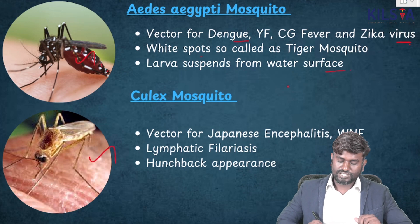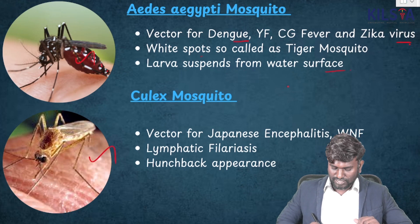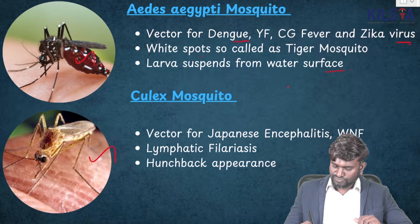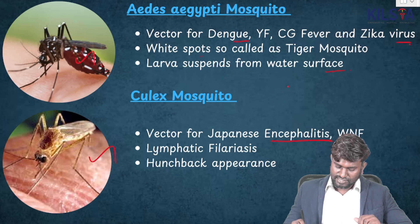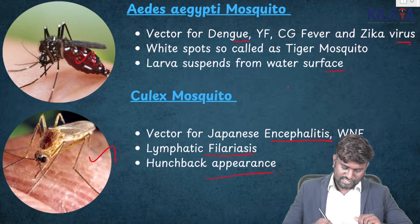This image is going to be Culex — the vector for Japanese Encephalitis, lymphatic filariasis, and it also shows a hunchback appearance.